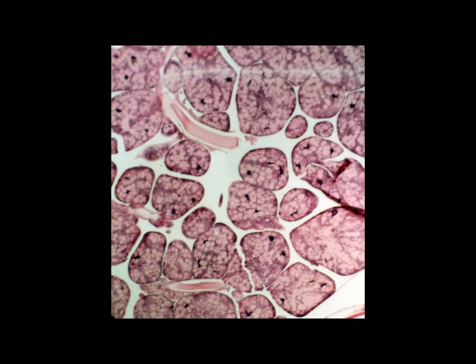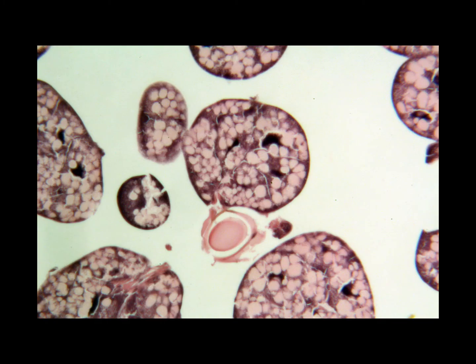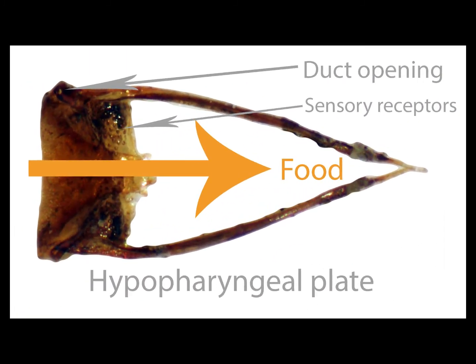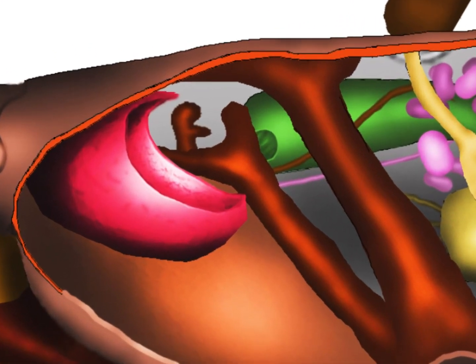The brood food gland goes through a number of changes over the life of the bee and is most developed early in the bee's life when its duties are within the hive, including feeding the larvae. As the bee matures and becomes a forager, the brood food or hypopharyngeal glands shrink. However, there is some evidence that they continue to produce invertase — the enzyme which splits sucrose to glucose and fructose. This gland also retains the ability to regenerate if a mature bee needs to nurse larvae again.